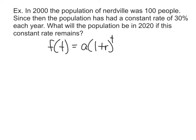Alright, the example says, in 2000, the population of Nerdville was 100 people. Since then, the population has had a constant rate of 30% each year. What will the population be in 2020 if this constant rate remains? So the first thing I need to do is I need to define what my a, or my initial amount is, what my r, or my rate is, and what my t, or my time is.